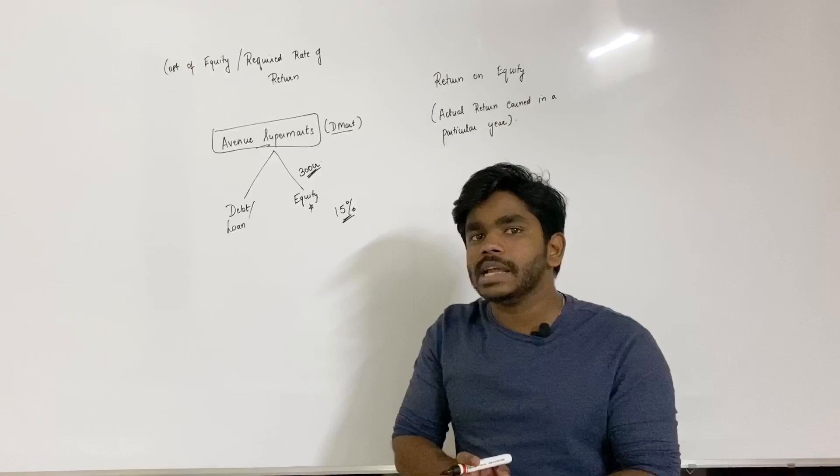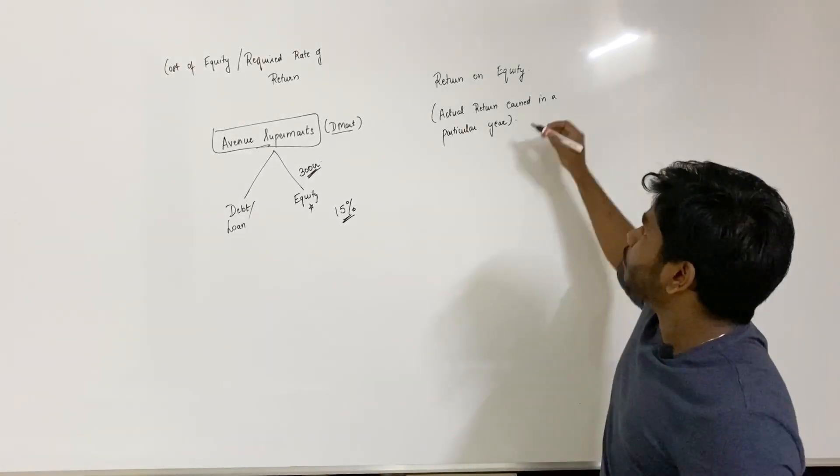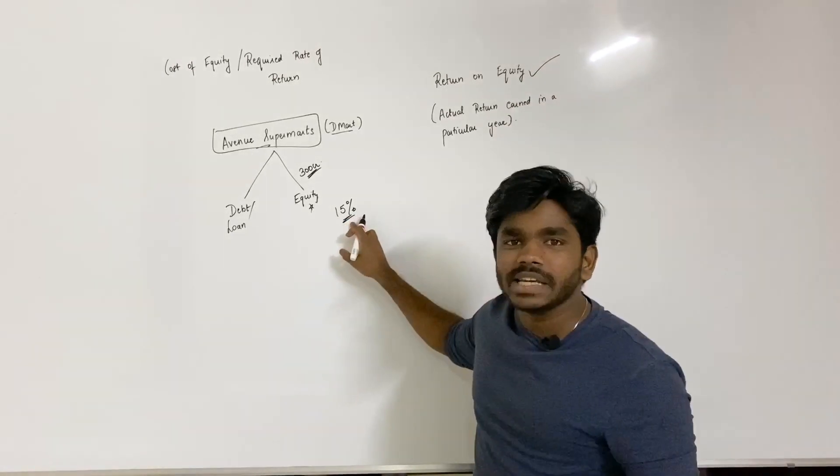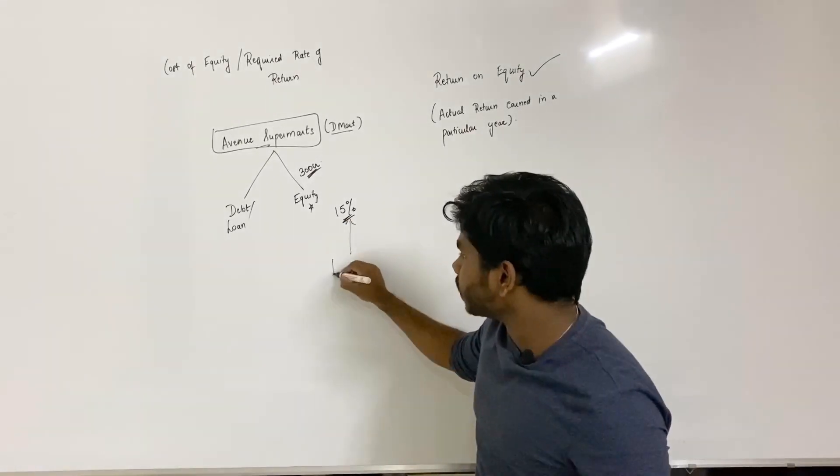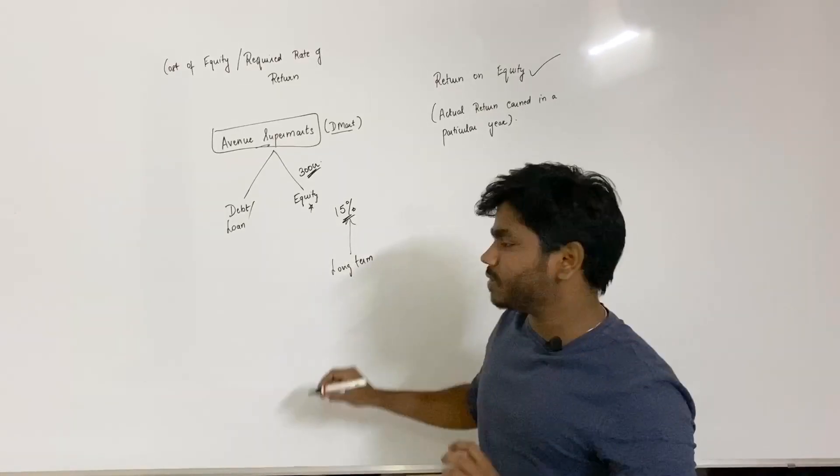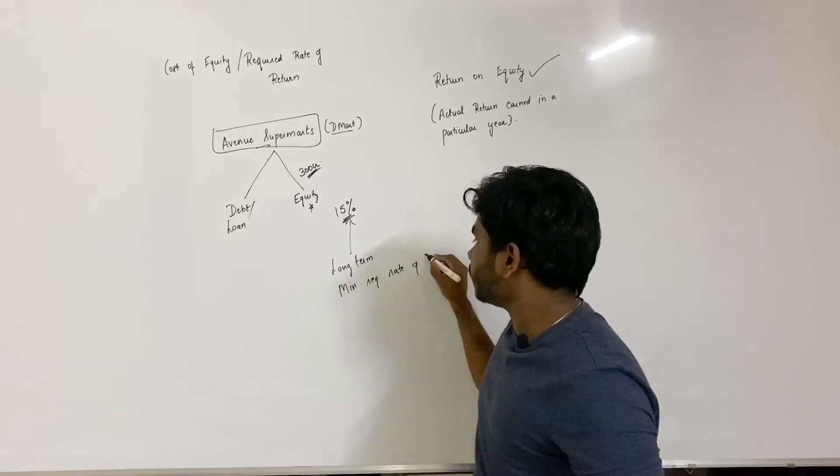So, for an investor, the actual returns, the company has actually gained how much money? For that, we need to see return on equity. And what is 15%? What is on an average long term? Long term, it's minimum of 15%. It means minimum required rate of return.